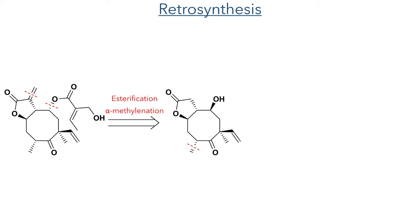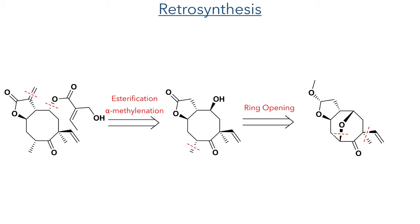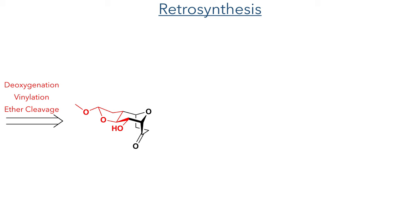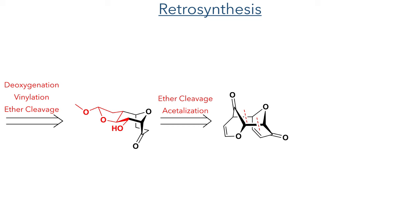The first disconnections occur at the alpha-methylene group and the pendant ester group. The intermediate that will be used to generate this contains a hydroxyl group and methyl group alpha to the ketone. This can be disconnected leading back to an intermediate containing a transannular ether linkage. This ether linkage, along with the alpha-substituents, can be disconnected and generated from a tricyclic species containing a fused acetal furan through deoxygenation, ventilation and ether cleavage. Further disconnections incorporating an ether cleavage and acetalisation leads back to an oxopyrilium dimer which could be produced using a simple cycloaddition.